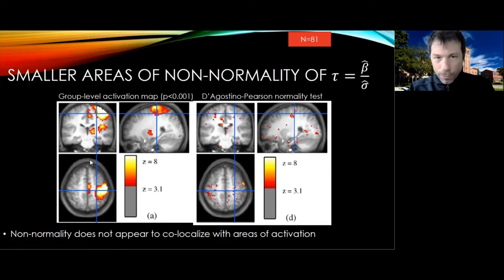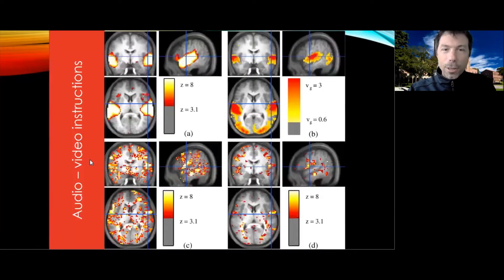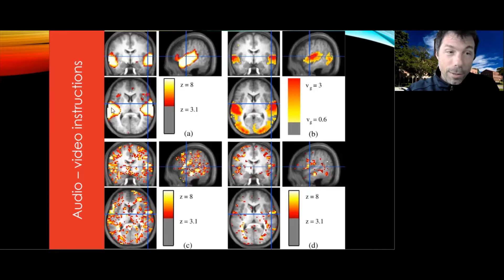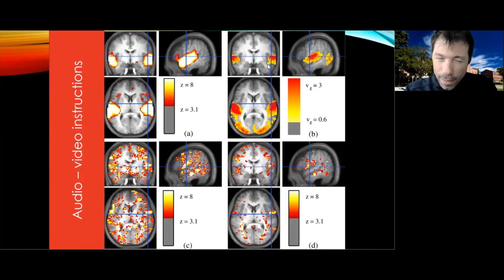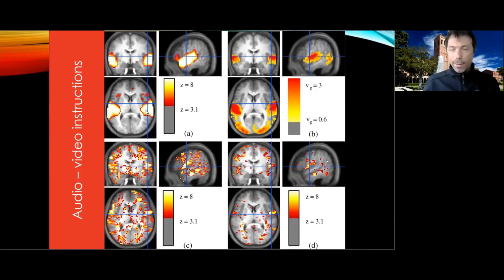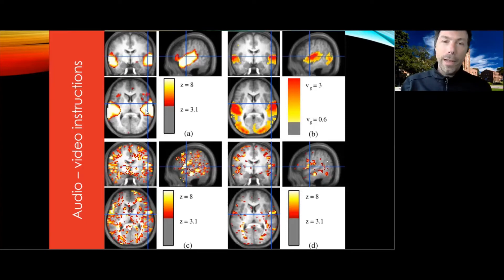This extends to other subtractions. For an analysis of audio minus video instructions, you can see a really large temporal lobe activation — pretty standard — and some frontal activation, pretty standard for auditory instructions. If you look at the variance, the parts of the brain with high variance are the parts that are active. Again, the magnitude of the effect is correlated with the magnitude of the variance: the textbook definition of heteroscedasticity.